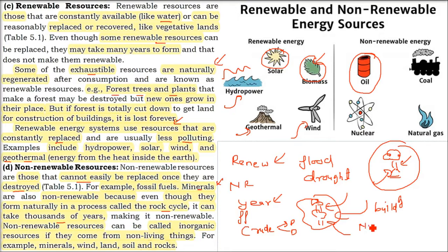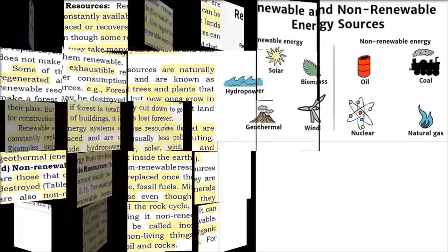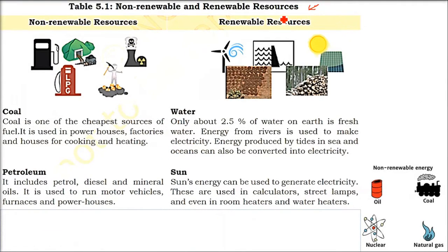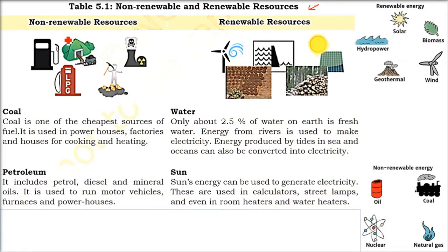In non-renewable resources, we have two further categories: organic and inorganic. Organic resources are those formed by living beings, while inorganic resources are formed by non-living things. Inorganic examples include minerals, wind, land, soil, and rock. To summarize: we have exhaustible and inexhaustible, and renewable and non-renewable resources. Non-renewable resources cannot replenish themselves, while renewable resources will replenish.